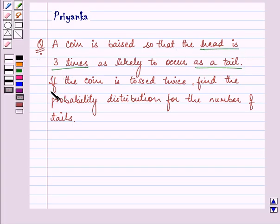If the coin is tossed twice, find the probability distribution for the number of tails. So let us discuss the question.